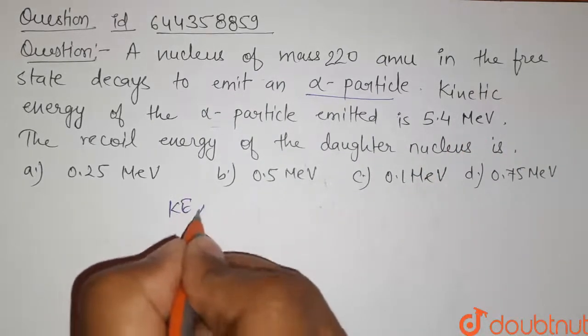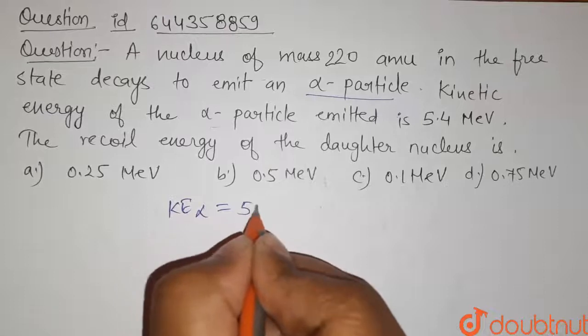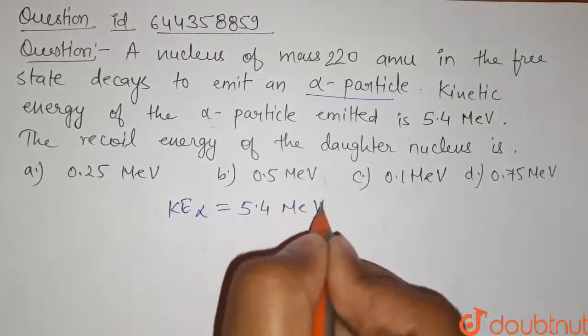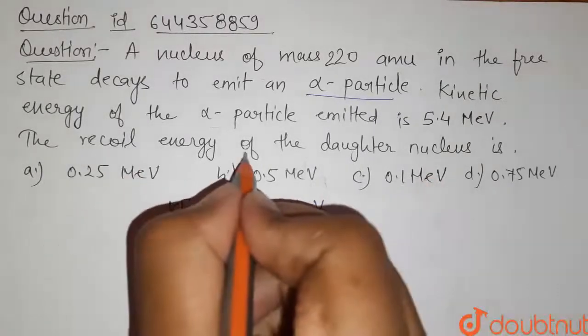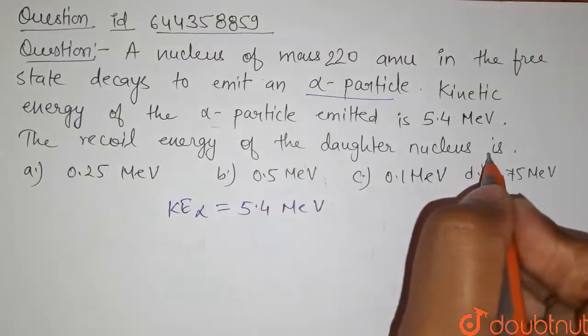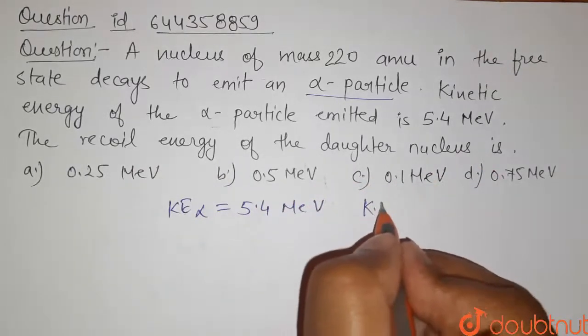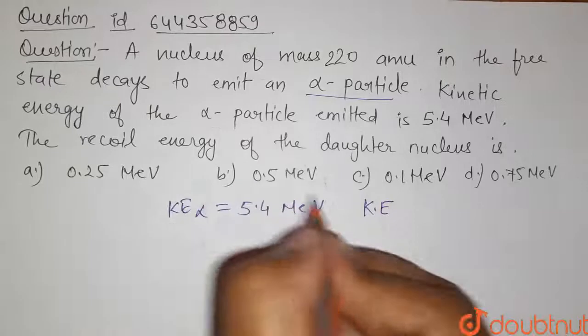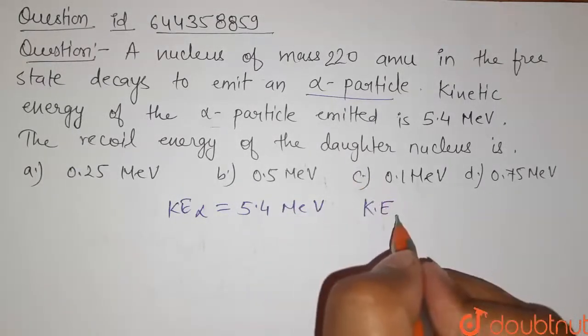That is, kinetic energy of alpha particle is given as 5.4 mega electron volts. The recoil energy of the daughter nucleus is what we have to find - that is, the kinetic energy of the daughter nuclei.